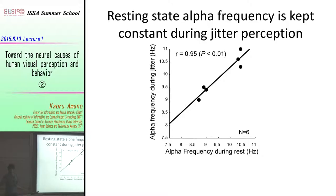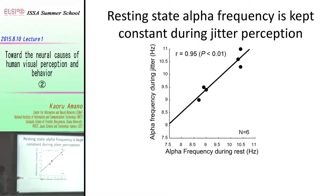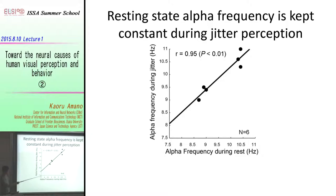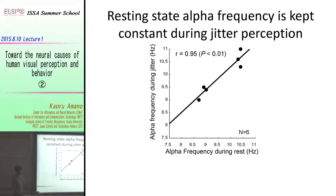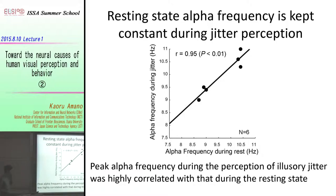Here I'm showing the alpha frequency during jitter observation. As I mentioned, there was a very strong correlation. There was a small increase in frequency when observing jitter compared to the resting state, but the inter-individual difference was bigger compared to the within-subject variability. This means that peak alpha frequency during the perception of illusory jitter was highly correlated with the frequency during the resting state.